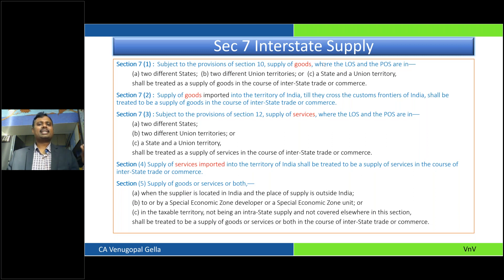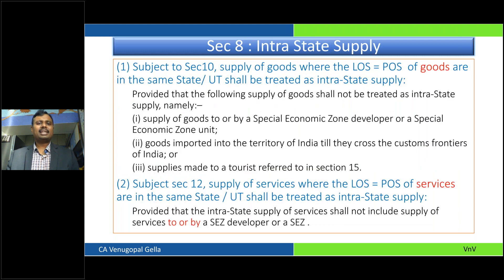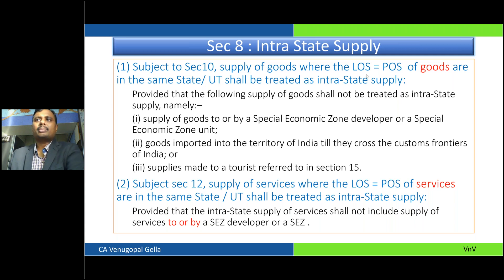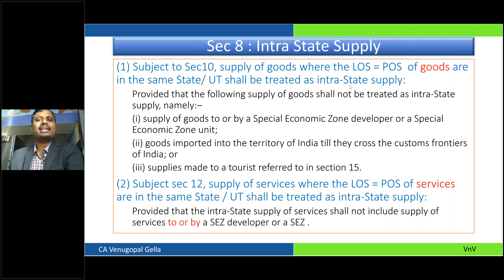Whenever the supplier is located in India and the place of supply is outside India, it is treated as an IGST transaction. That is the transactions to be referred to as interstate, and when we are saying interstate, the levy to charge is IGST. For intrastate — subject to sections 10 and 12 — wherever location of supplier is equal to place of supply, both for goods and services, that transaction shall be treated as an intrastate supply. There are some exceptions which we will come to as we go further.